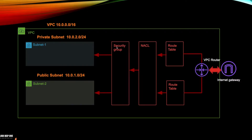If we talk about the difference between a security group and a network access control list: security groups, as I mentioned in my last video, are attached to the ENI — they control traffic at the ENI level. Network access control lists control traffic at the subnet level. So if I have four different EC2 instances I can have four different security groups, but I can have only one NACL at the subnet level controlling traffic for all four instances.